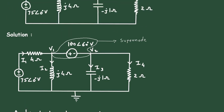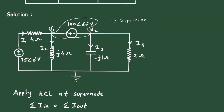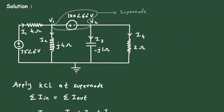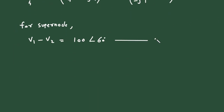Next, we will solve the super node constraint. For the super node, we can see that V1 − V2 is equal to 100 at an angle of 60 degrees. Let us say this is equation number 2.